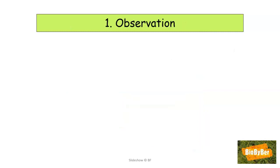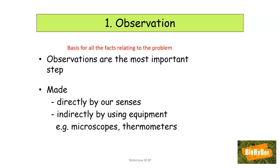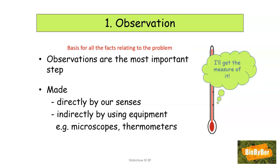Let's start with observation. Observations are really the most important step of the scientific method because it's all based on noticing something. Observations are the basis for all the facts to do with the problem. Observations are usually made directly by using your senses and sense organs, or they can be made indirectly by using equipment like microscopes and thermometers. To illustrate this, I'm going to use the idea of an imaginary apple. As an observation, I notice a rotting apple on the table and it's covered in a fluffy, furry mould.